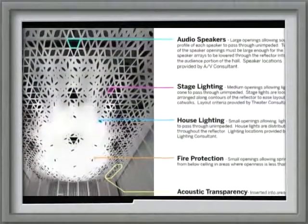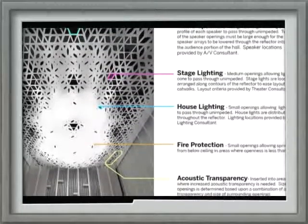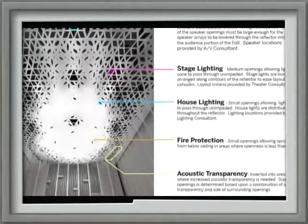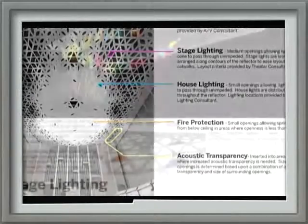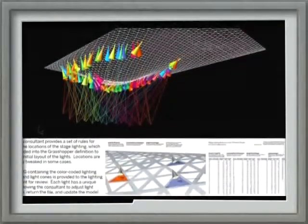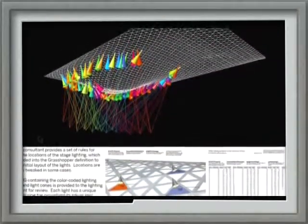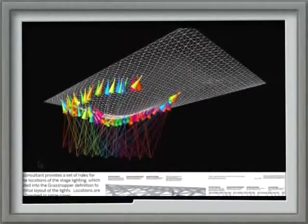The acoustic reflector, in addition to performing well acoustically, needs to serve a number of other purposes. There are audio-visual speakers incorporated into it, lighting systems, performance lighting, fire sprinklers, and rigging points — all of which needed to be incorporated. That is partly why you see different-sized openings in different areas.